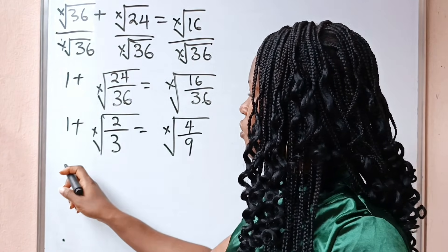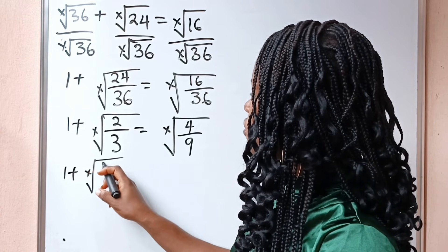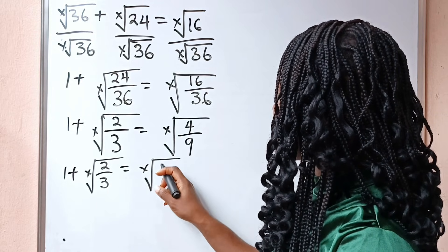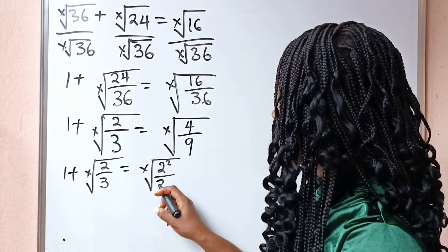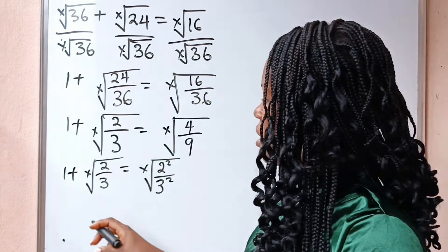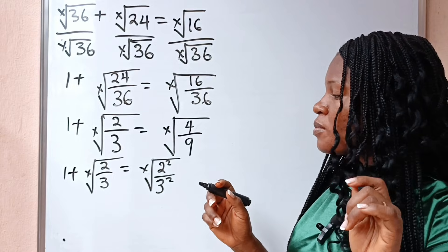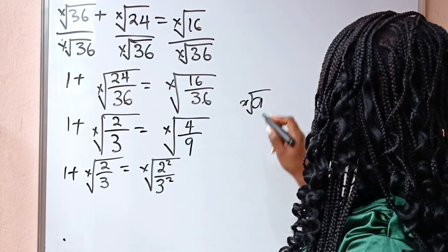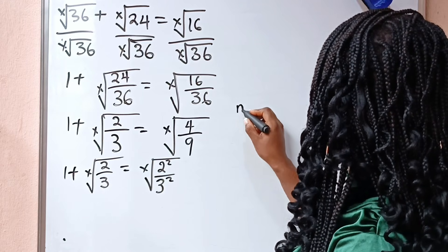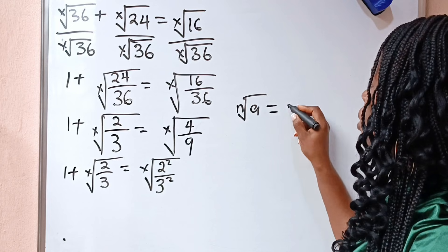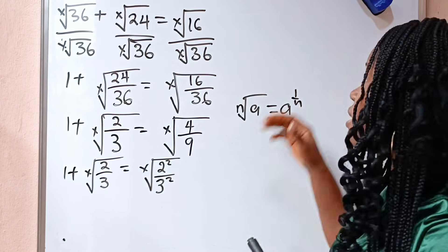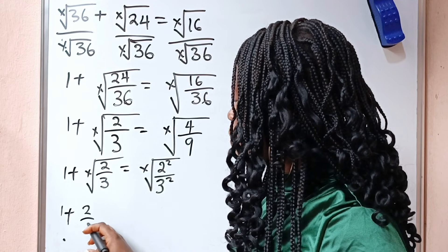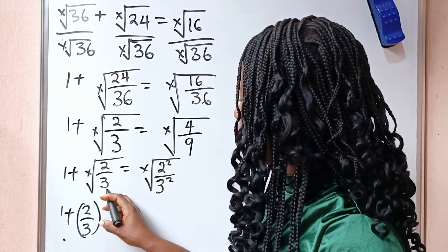Now we have 1 plus x-root of 2 divided by 3 is equal to x-root of — now 4 is the same as 2 squared, and 9 is the same as 3 squared. Note that when you have x-root of a, or n-root of a, this is equal to a to the power of 1 over n. So that simply means this can be written as 1 plus 2 over 3 raised to the power of 1 over x.